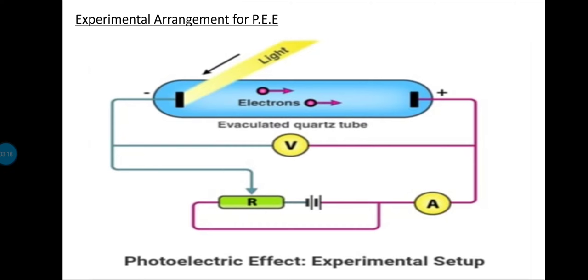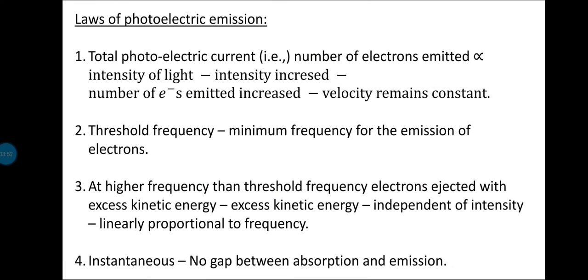After performing the experiment, the observations are concluded in the form of laws known as the laws of photoelectricity — the conclusions drawn from experiments using this apparatus. The first law states that the total photoelectric current is directly proportional to the number of electrons ejected, and the photoelectric current is directly proportional to the intensity of the radiation.